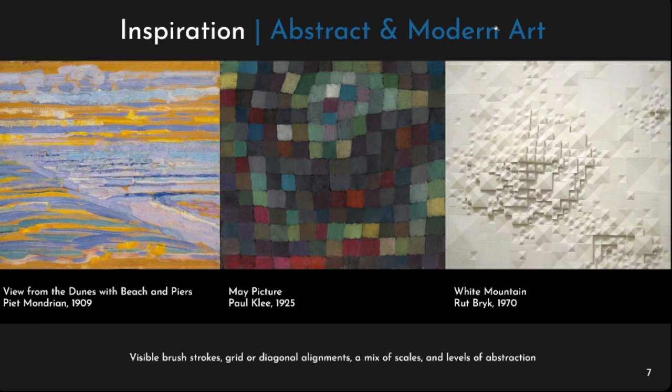For more modern and abstract inspiration, Mondrian and Paul Klee are two big influences on my work. And Ruth Brick, who I found relatively recently — I found her piece White Mountain, I think it was in the Rijks Museum. It's very geometric, lacks colour, but still a big inspiration. You can hopefully see the visible brushstrokes in the other pieces, so that's a big influence.